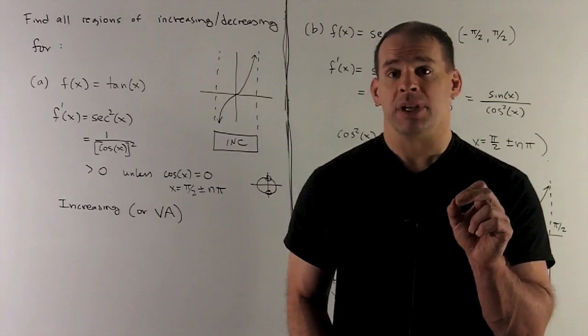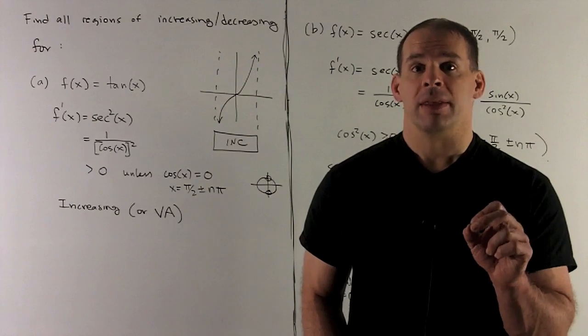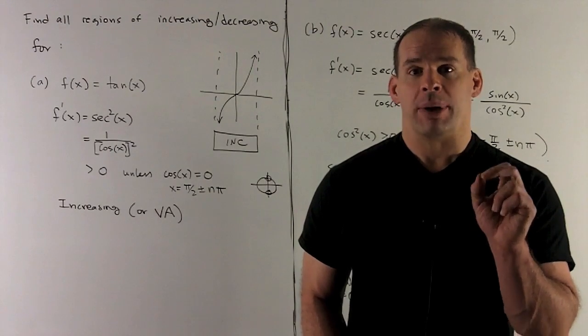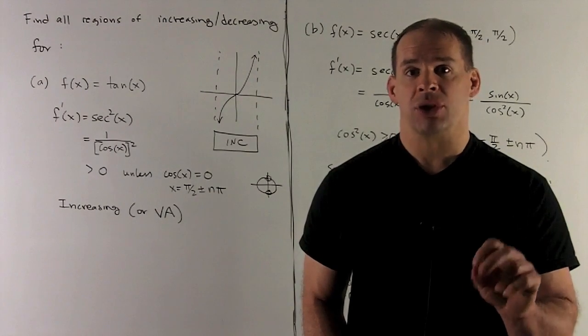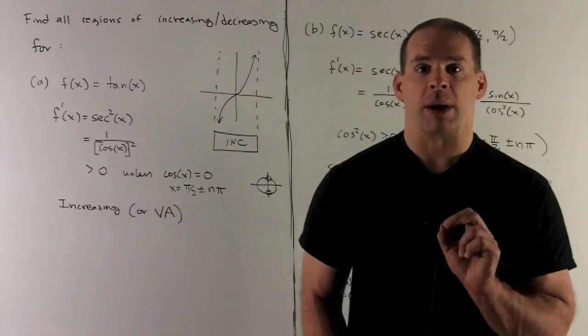So how do we get undefined? We'll note that secant is equal to 1 over cosine. So I'm only going to have a problem when cosine is equal to 0. That's going to happen when I'm at pi halves, minus pi halves, pretty much anything with those two numbers where you add or subtract pi.